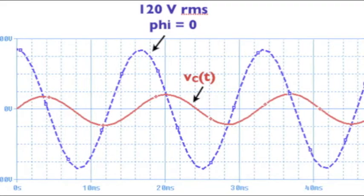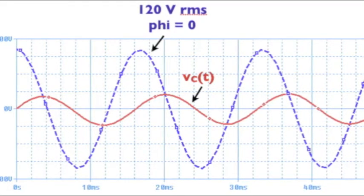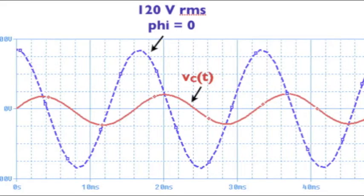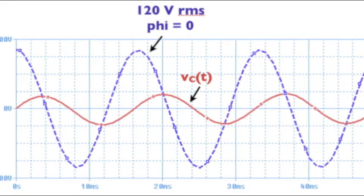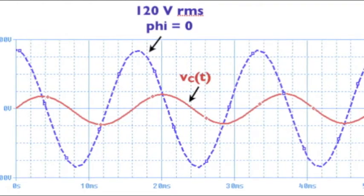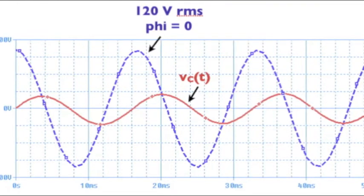This SPICE result shows the applied AC voltage in blue, and the resulting voltage across the capacitor is shown in red. Note there's a voltage division between the resistor and capacitor, and the capacitor voltage is shifted by about 75 degrees relative to the applied voltage.